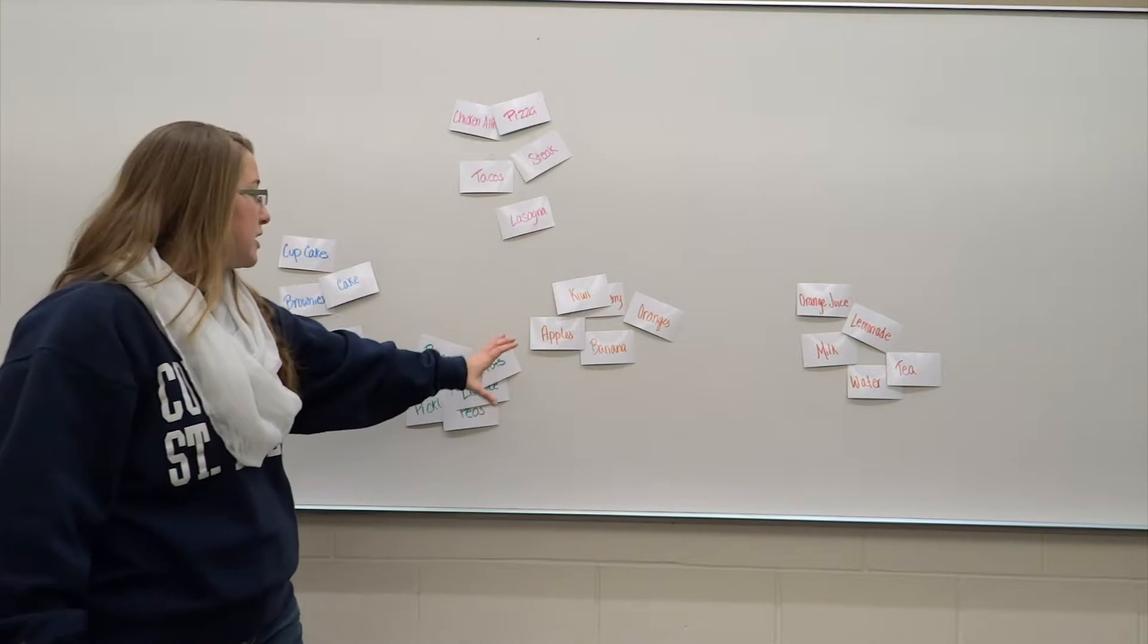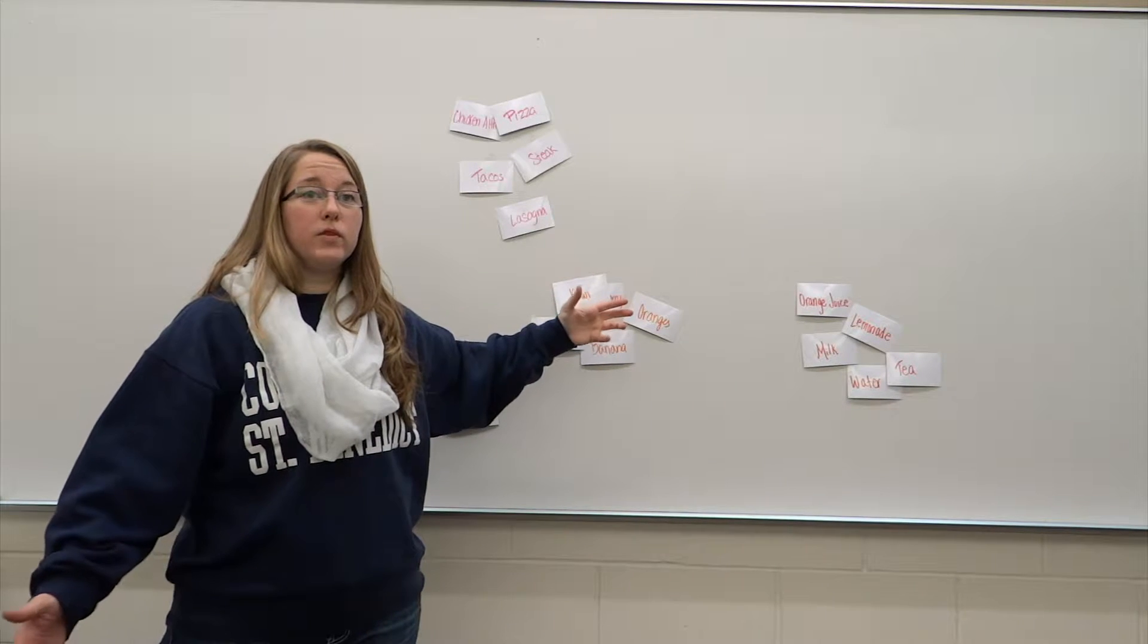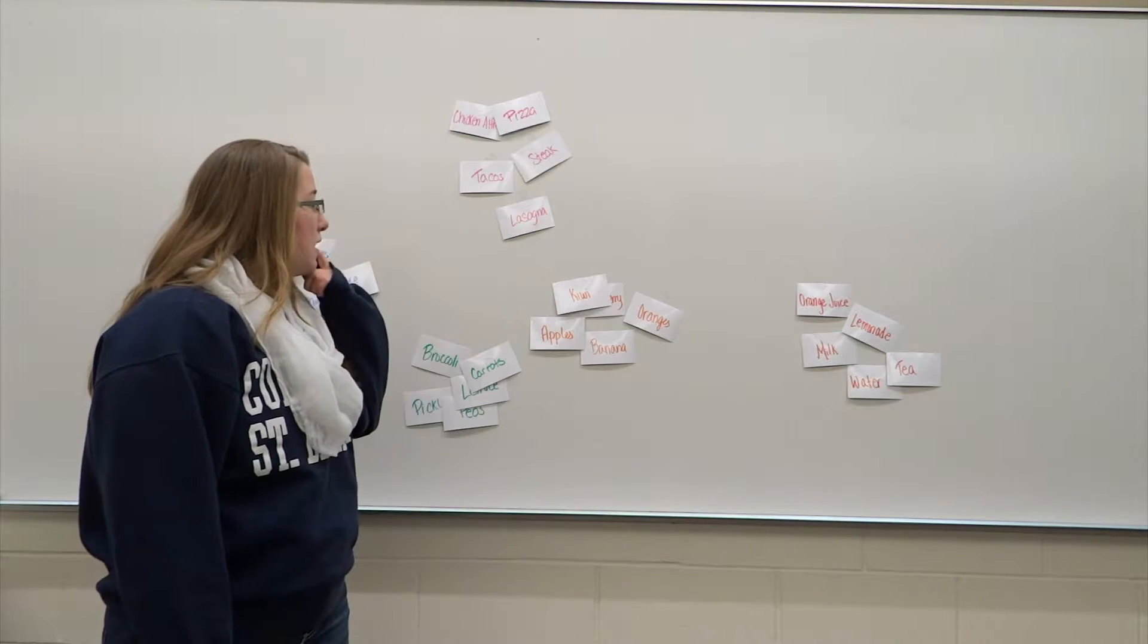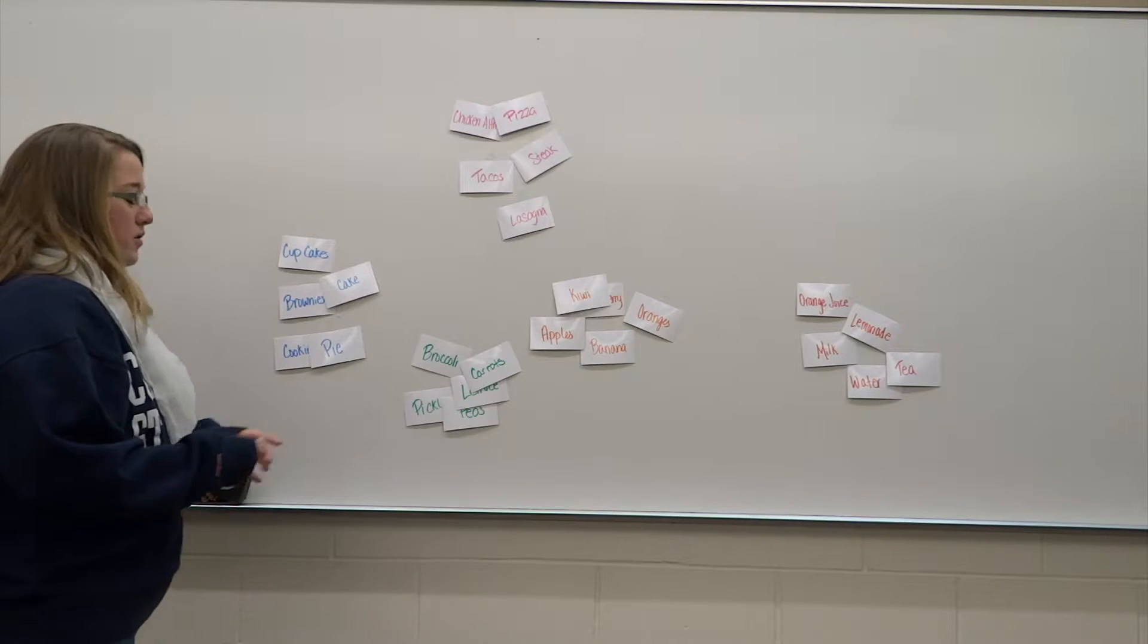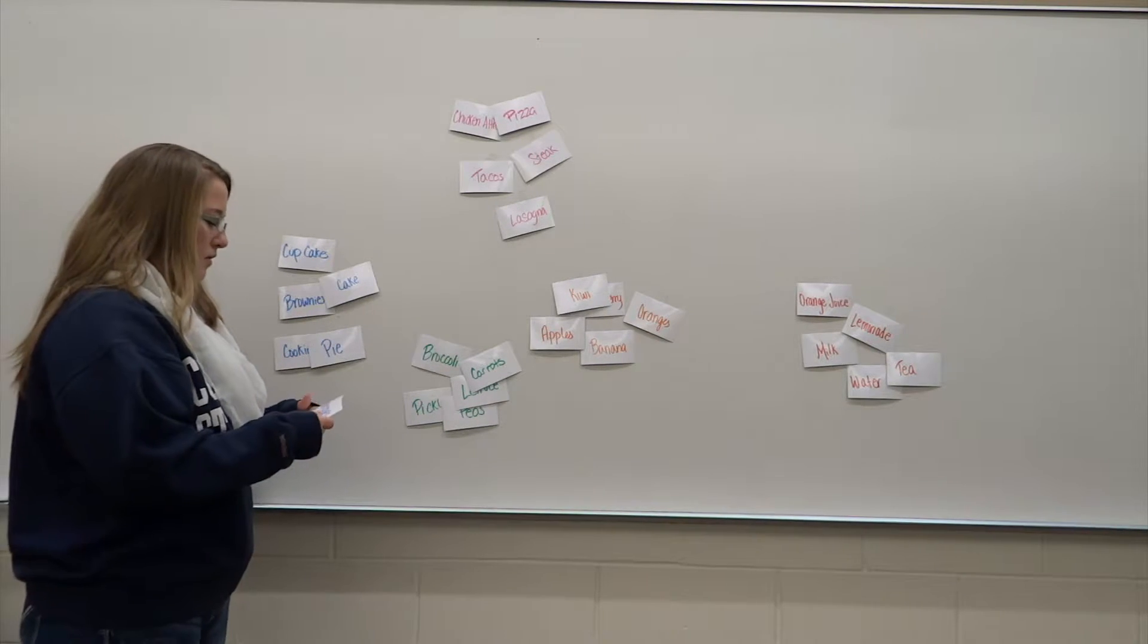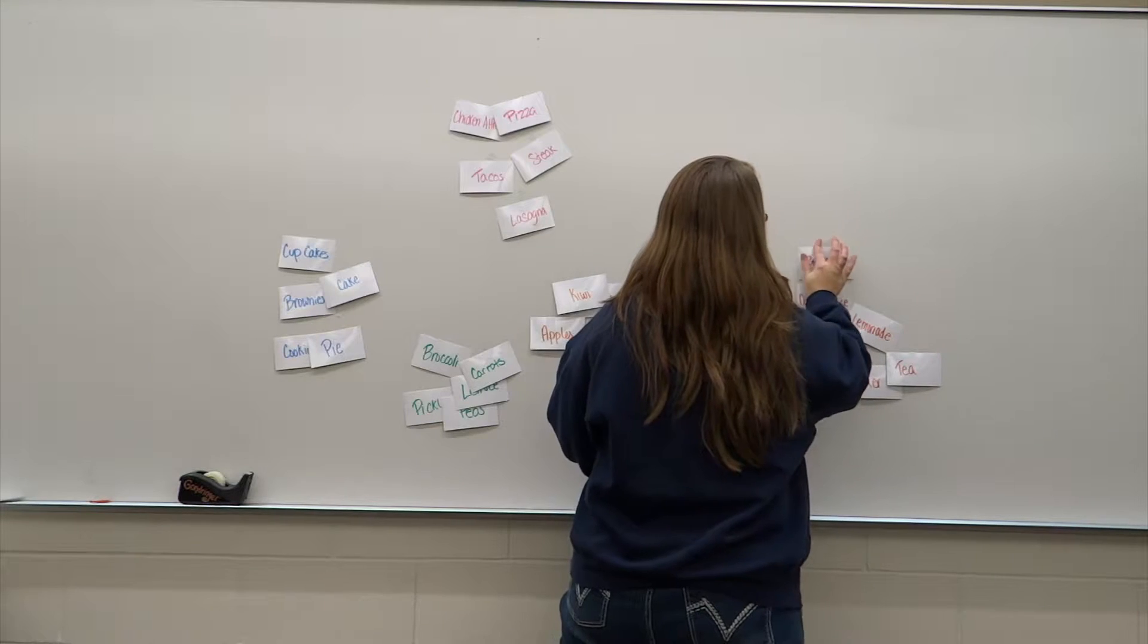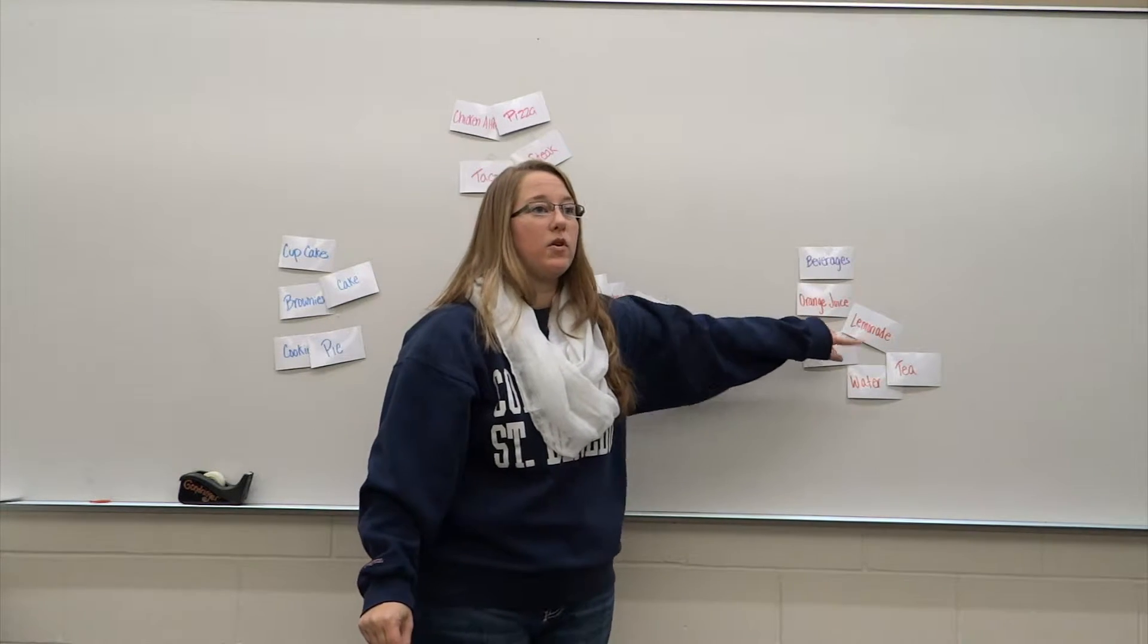It's just easier to write and to make an outline when you have everything organized. The next step is to give labels to each of your categories that you have sorted out. So over here, I have some beverages. In my paper, this would be my heading, and then I would talk about all five of my beverages.